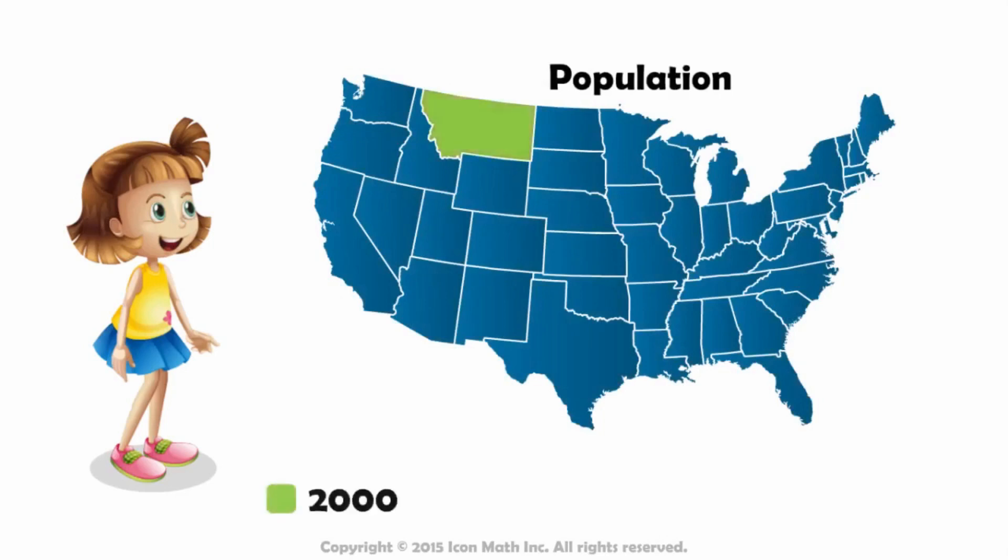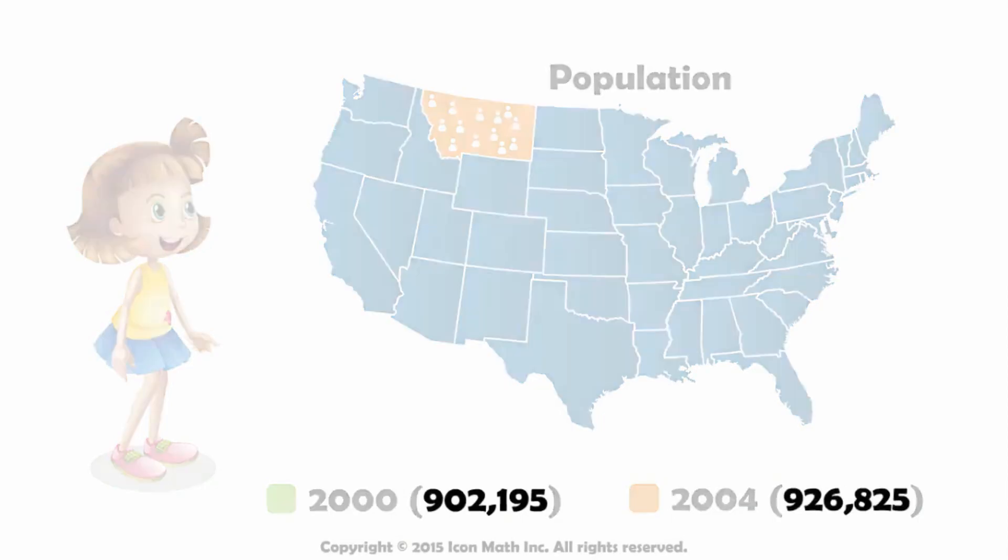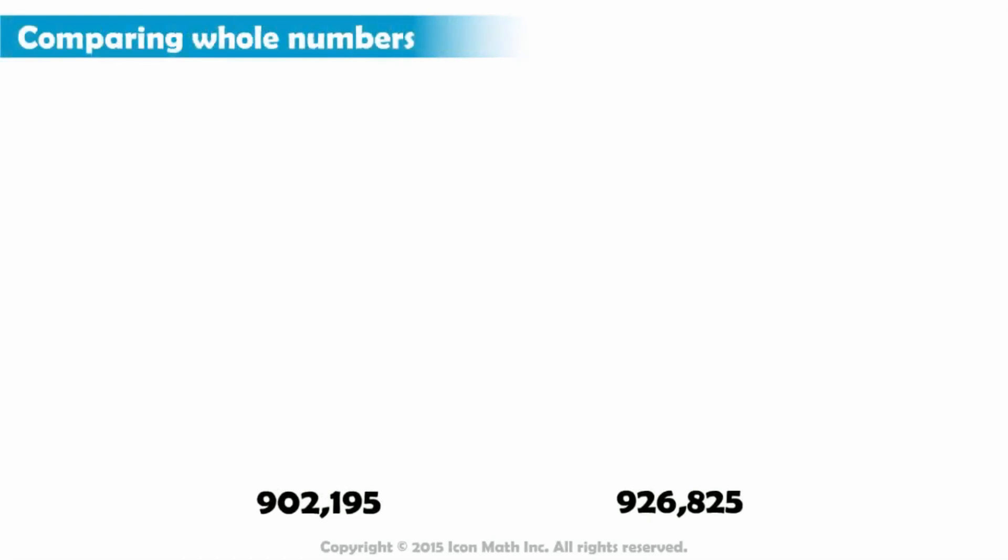In the year 2000, the population was 902,195. While in 2004, it was 926,825. Jenny wants to compare the two numbers to tell which year had the greater population.